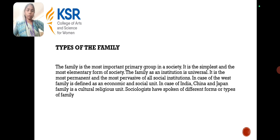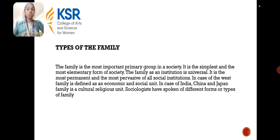The types of family: the family is the most important primary group in society and the simplest and elementary form of society. As an institution, the family is universal — the most permanent and pervasive of all social institutions. In the West, family is defined as an economic and social unit, while in China and Japan, family is a cultural and religious unit. Sociologists have spoken of different forms and types of family.